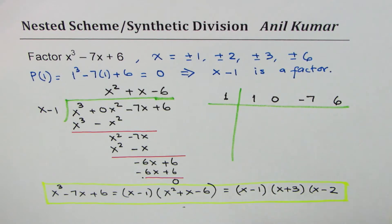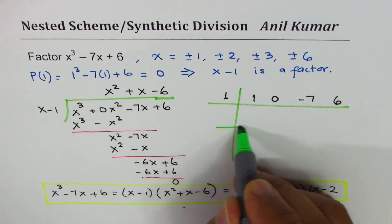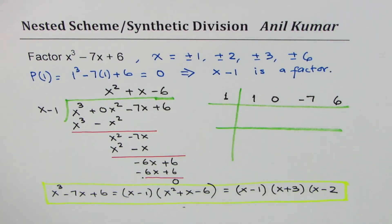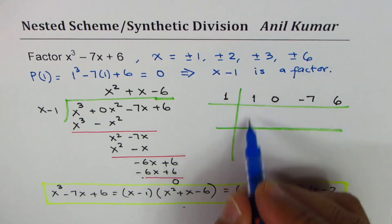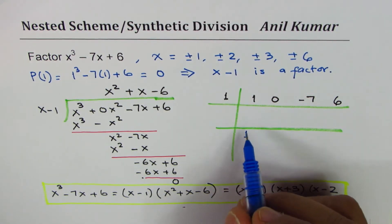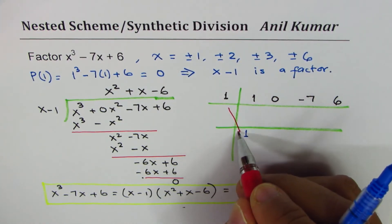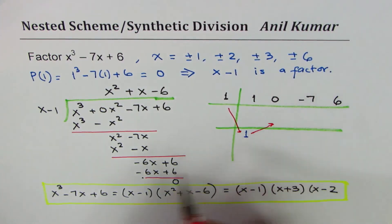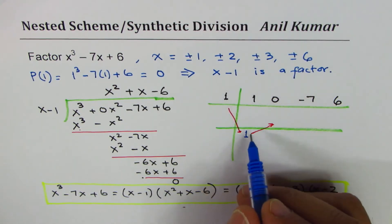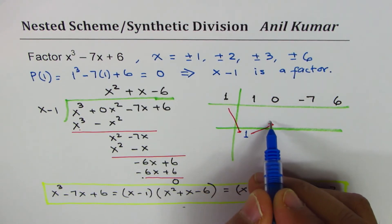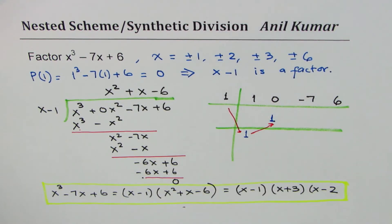Now since 1 gave us 0, we'll divide by 1. We are not using minus 1, so the strategy here is use 1 and add instead of subtracting. First step here is bring down the leading coefficient, and the second is you have to multiply these two and place it right there.